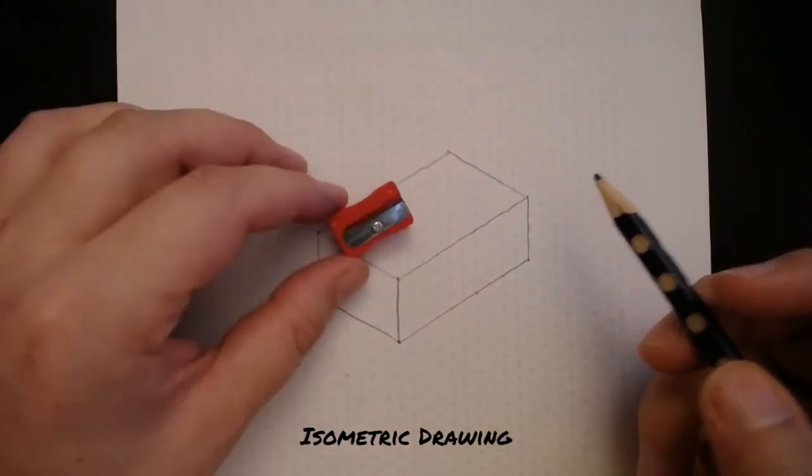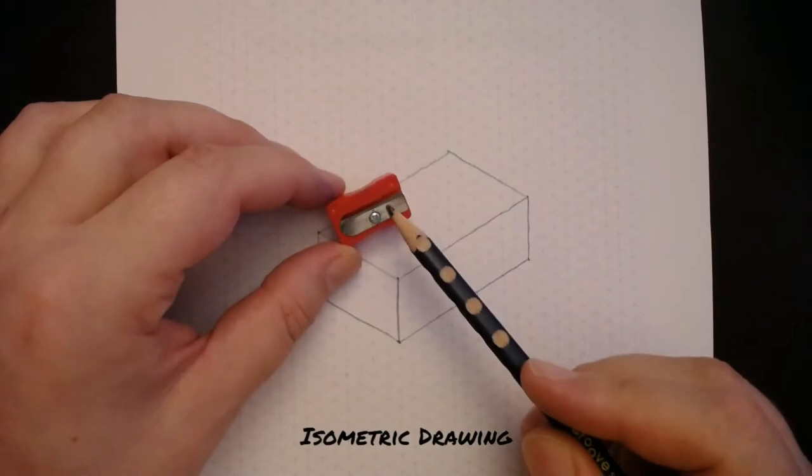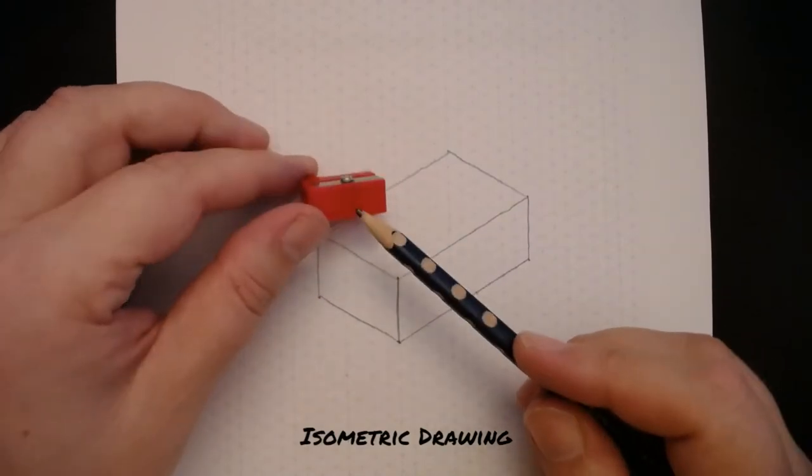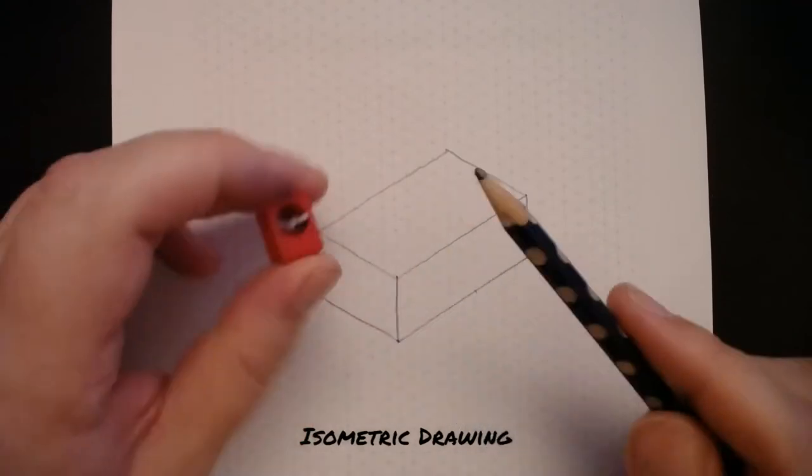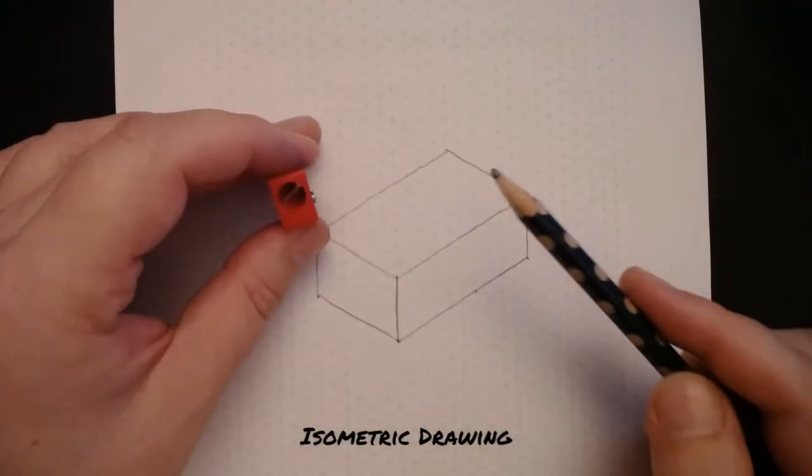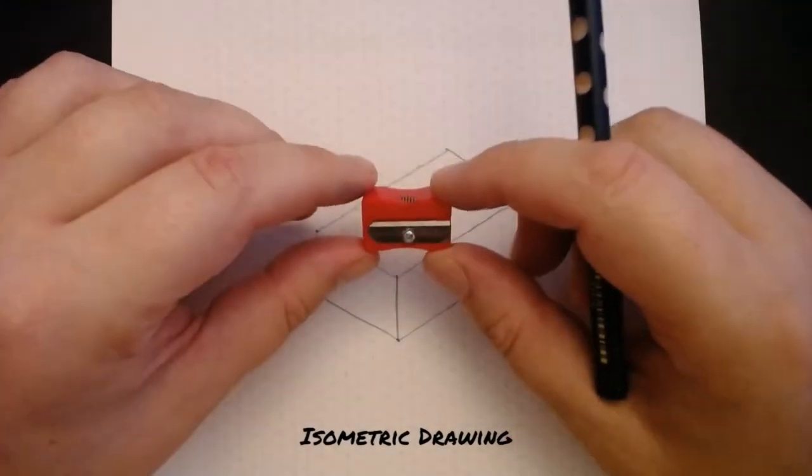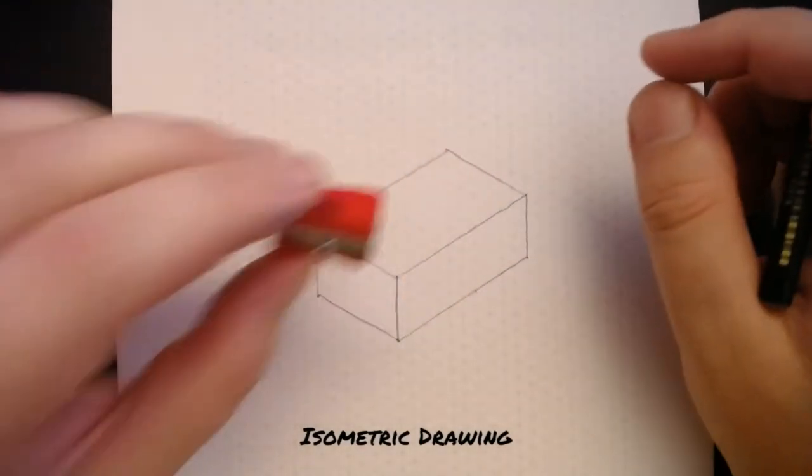Now normally I would just jump straight in and start transferring the information I see on the top surface onto the top, the side onto the side, and the front to the front. But we're going to break it down and draw this first in 2D.